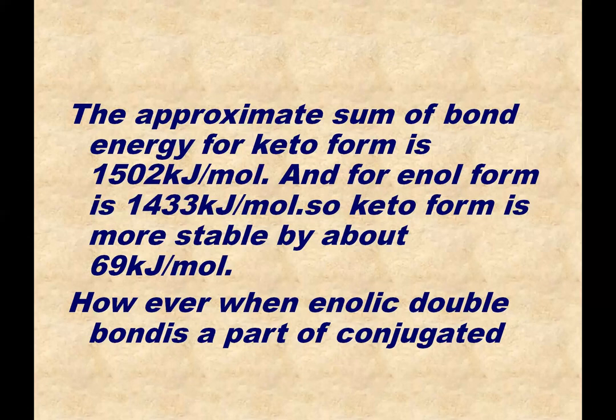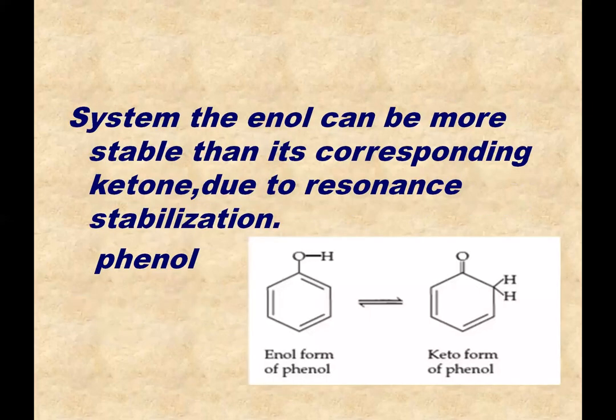So in normal cases, the percentage of keto form is greater compared to enol form. For simple acetone, keto form percentage is greater. But there are exceptions to this generalization: when the enolic double bond is part of a conjugated system, the enol can be more stable than its corresponding ketone due to resonance stabilization. When two double bonds are separated by a single bond, there is conjugation and the possibility of resonance.